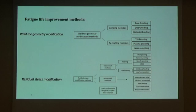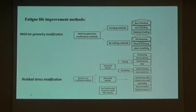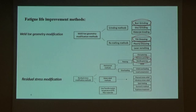Weld toe geometry modification methods can be categorized into grinding and remelting methods. For example, we have wear grinding, or we have TIG dressing from the remelting methods. From residual stress modification, it can be done via mechanical methods, stress relief methods, and the recent method using LTT filler materials. Mechanical methods include peening methods such as hammer peening or needle peening.